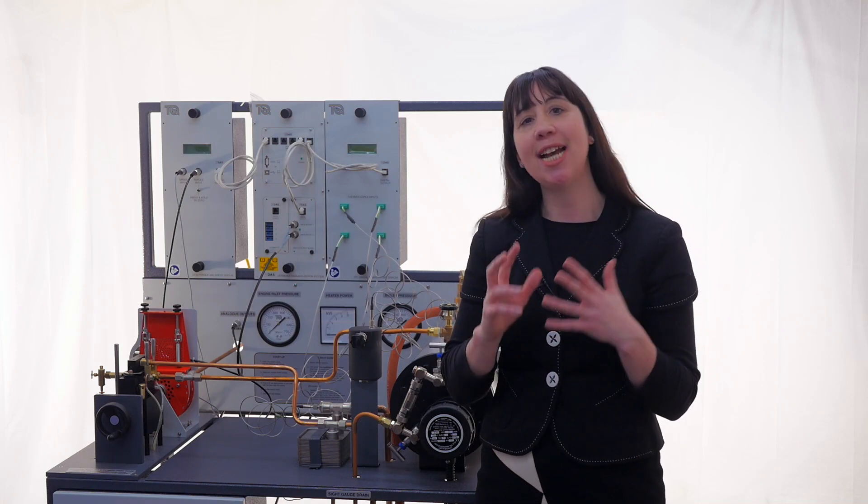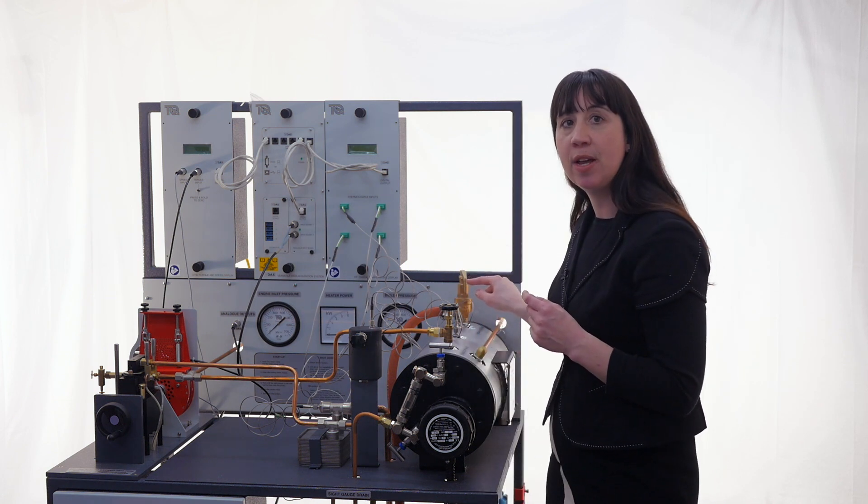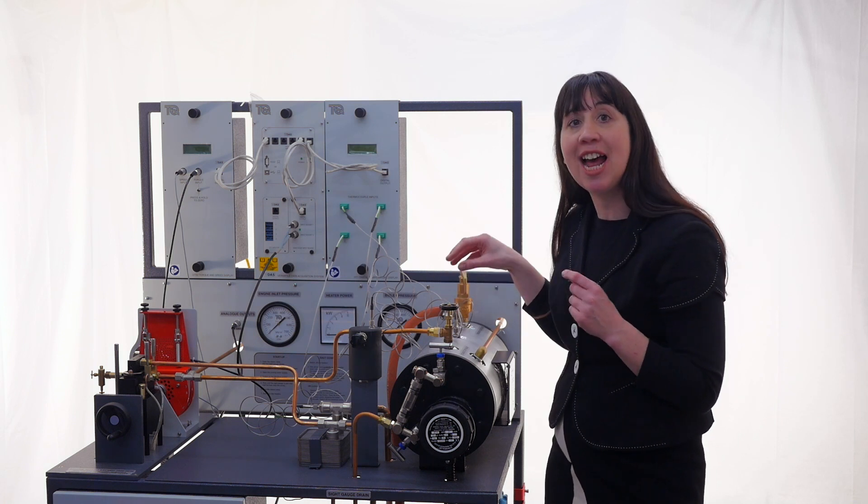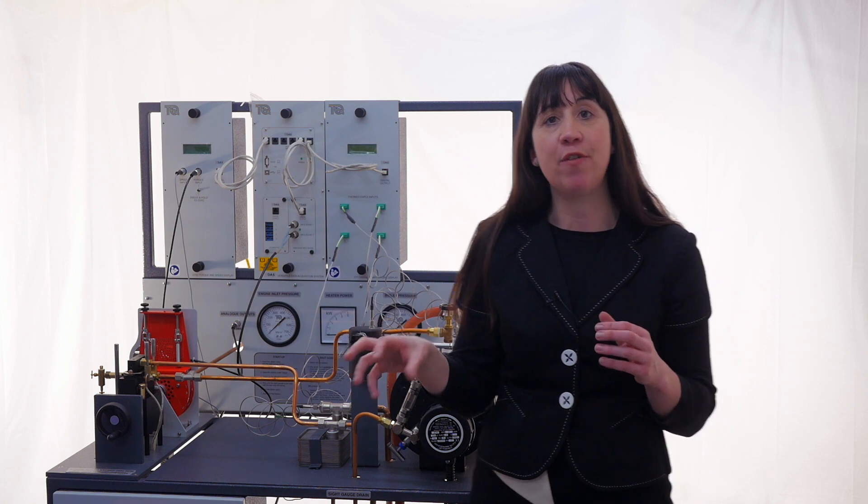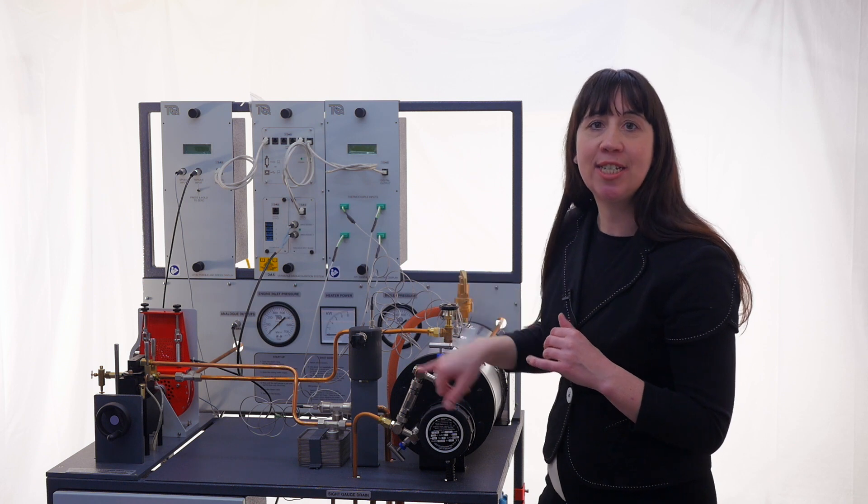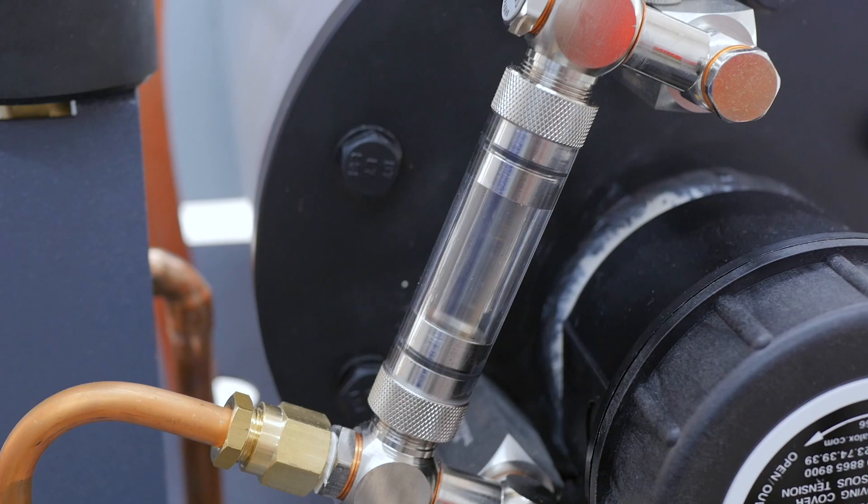To protect against overpressure, there is a spring-loaded pressure release valve here. On the top is a large steam cutoff valve, this bit here, that allows you to regulate the steam flow from the boiler to the engine. At the end of the boiler is a glass sight gauge. This is surrounded by a clear safety shield where you can see the level of water in the boiler.